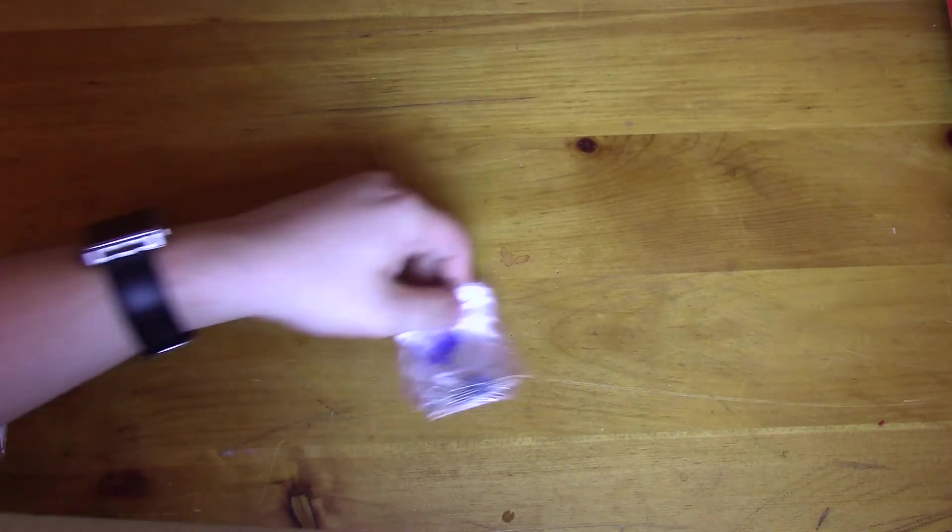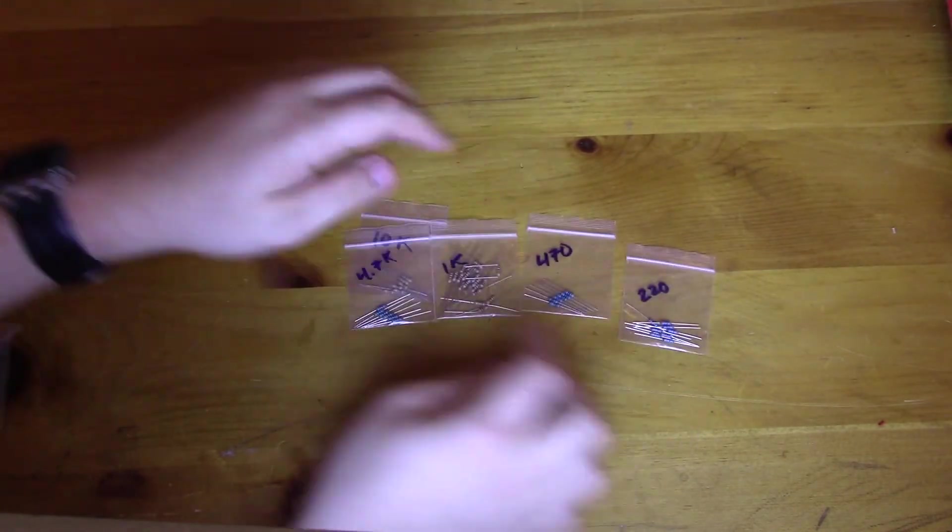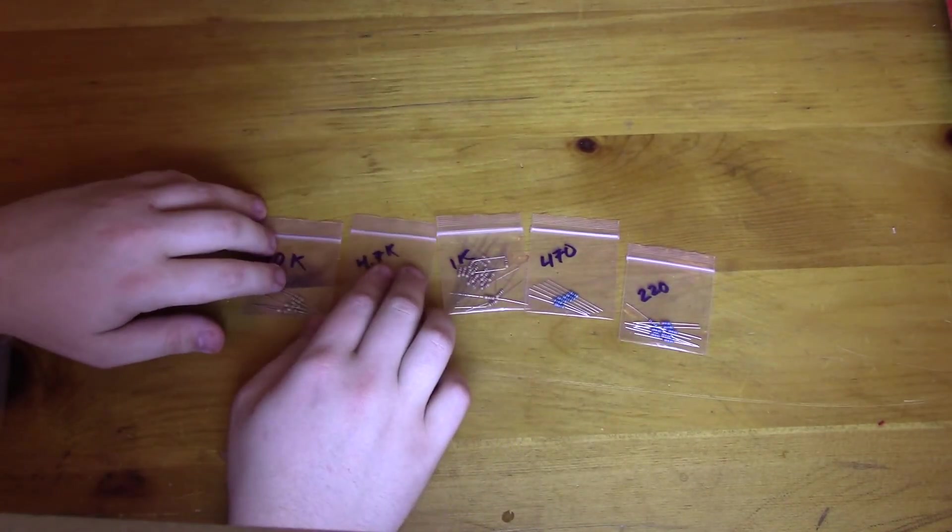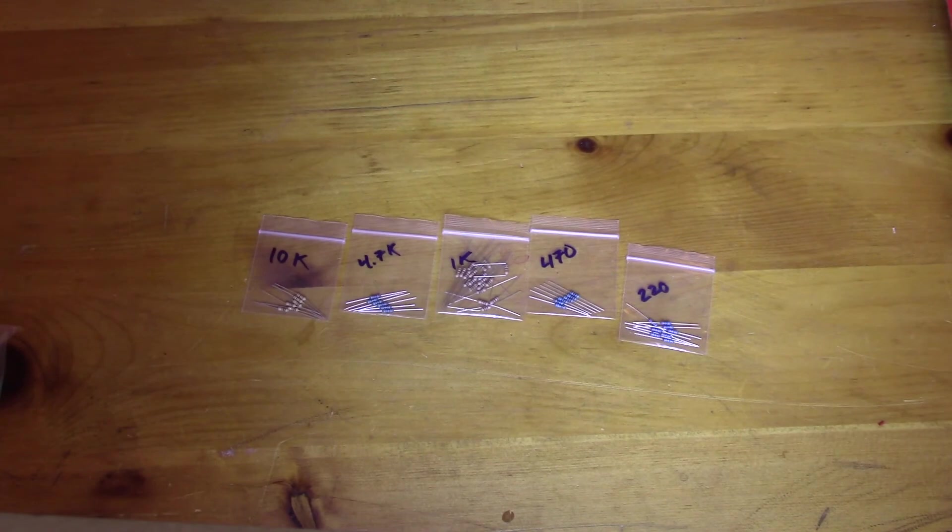Last, but definitely not least, are the resistors that I like to keep on hand. So I keep a good assortment of values. Again, not too many values because this is my on-the-go box. I don't need everything. Just need what's important.